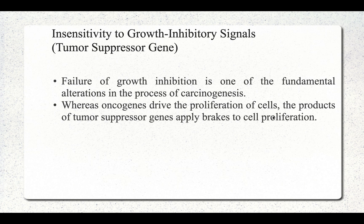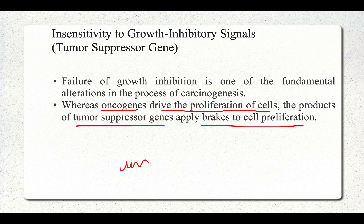Failure of growth inhibition is one of the fundamental alterations in carcinogenesis. Like oncogenes drive cell proliferation, tumor suppressor genes are equally important — they apply the brakes to cell proliferation. Therefore, for development of carcinoma, inactivation of tumor suppressor genes must occur.